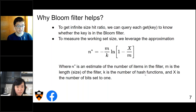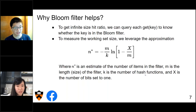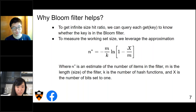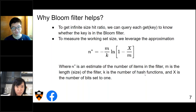So why does the bloom filter help? Our goal is to get the working set size and the infinite cache hit ratio. To get the infinite cache hit ratio, we query the bloom filter to see whether an object is present. If it is in the bloom filter, that means with a large enough cache, we would get a hit instead of a miss. To measure the working set size, we leverage an approximation equation that estimates the number of elements in the bloom filter. The equation uses parameters where m is the length of the filter, k is the number of hash functions, and x is the number of bits set to 1.